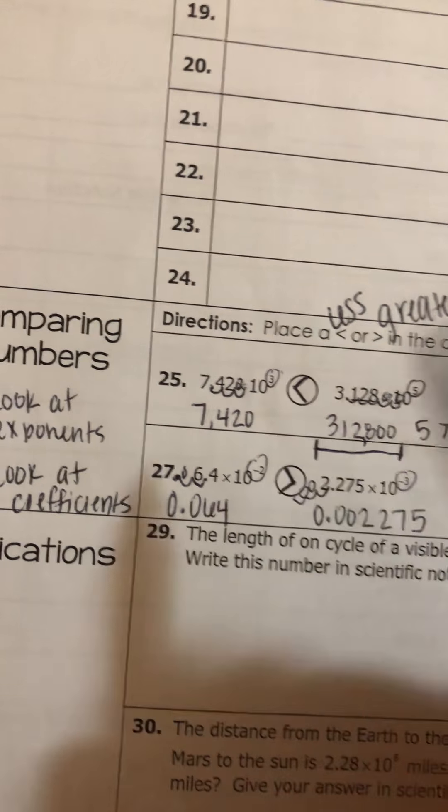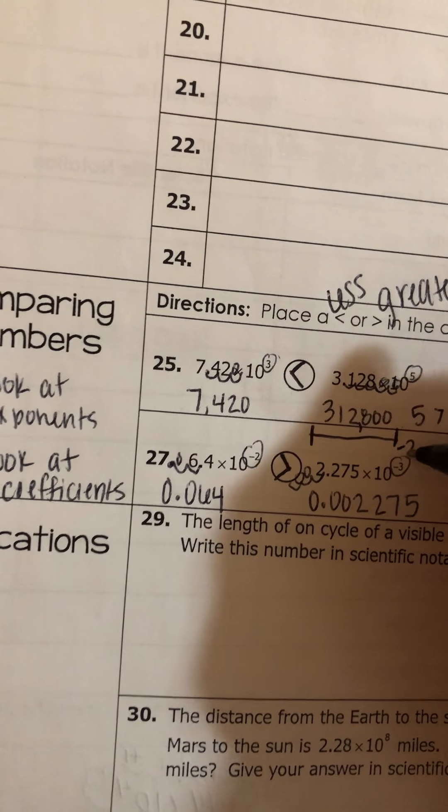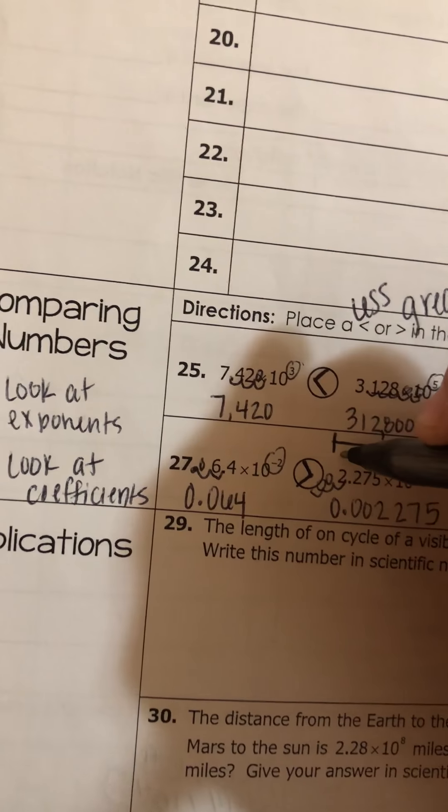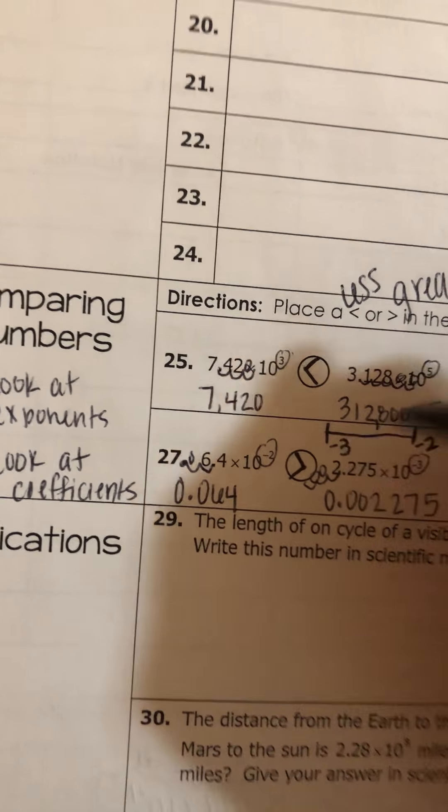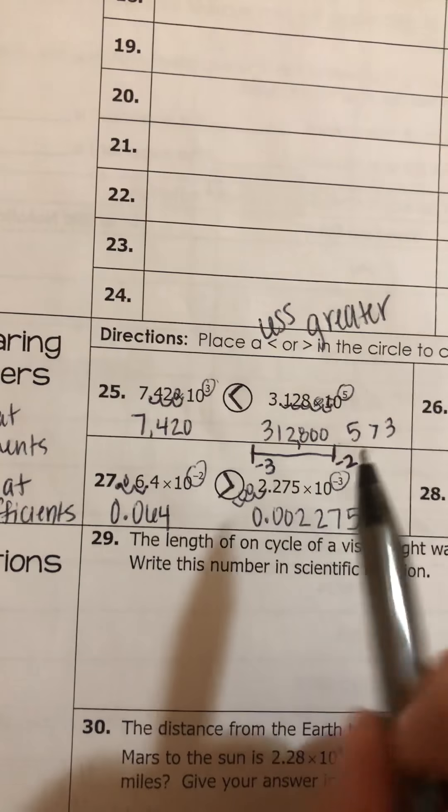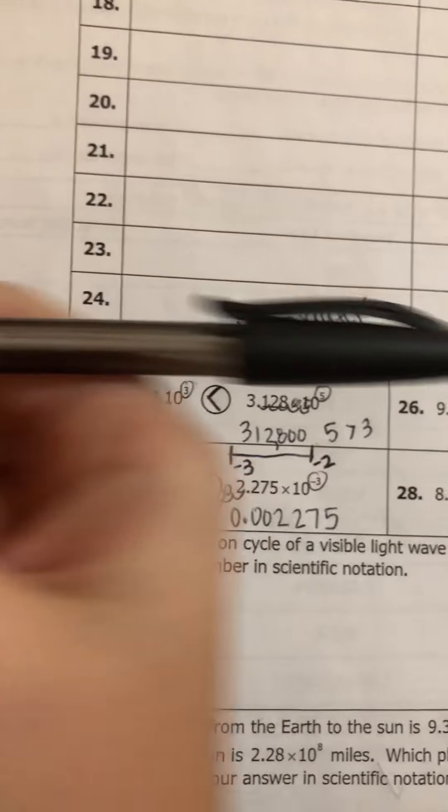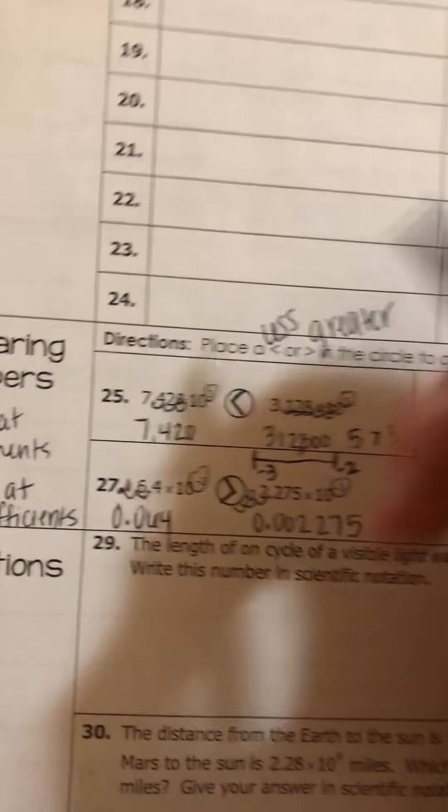And we could have compared exponents. So if I were to place negative 2 here on a number line, negative 3 could be here. Which one is greater in value because it's more right? Negative 2.